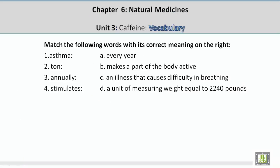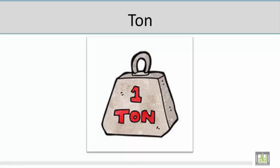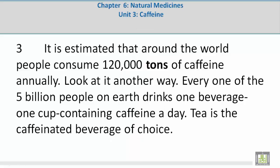Vocabulary word 2: Ton. The correct meaning is D — a unit of measuring weight equal to 2,240 pounds. Mohamed describes the picture showing a ton as a unit of measuring weight equal to 2,240 pounds. In context: 'It is estimated that around the world, people consume 120,000 tons of caffeine annually.'